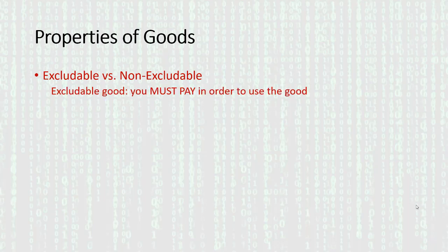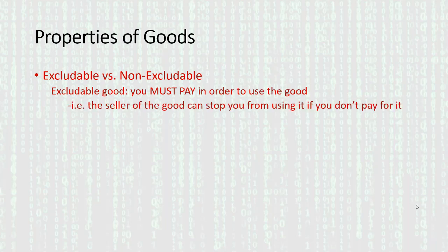If a good is excludable, that means the person using it has to pay for its use. If I go to buy a car, it's not like I can just drive away during the test drive and get off scot-free — they'll send the cops after me, they've probably got my driver's license. If I want the long-term use of that car, I better pay. So a car is an excludable good. Put another way, the seller can stop you from using it if you don't pay.